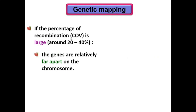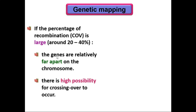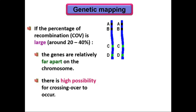If the COV value is large — around 20 to 40 percent — the genes are relatively far apart on the chromosome. Since they are far apart, there is a high possibility for crossing over to occur.